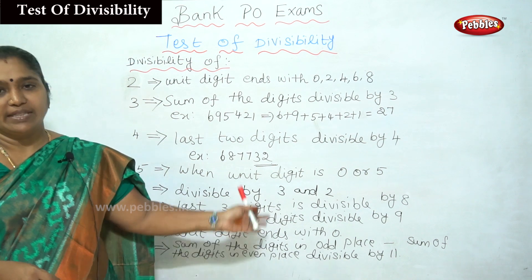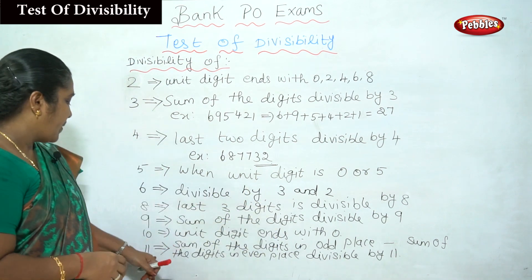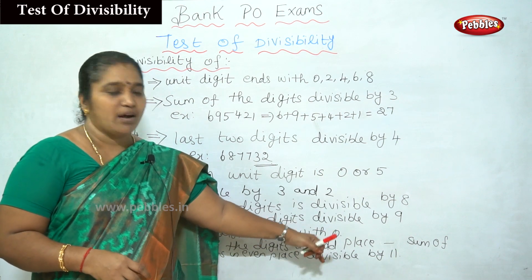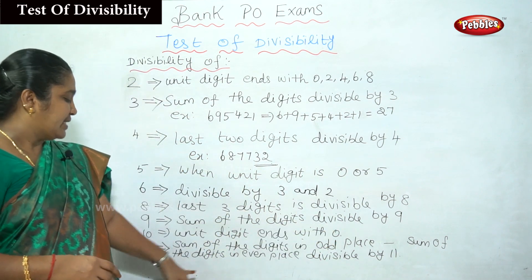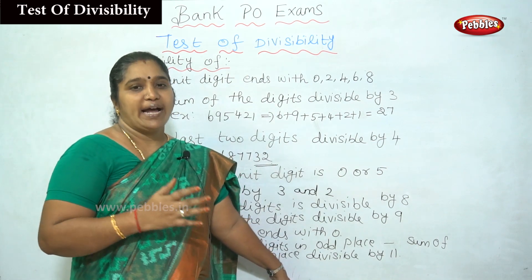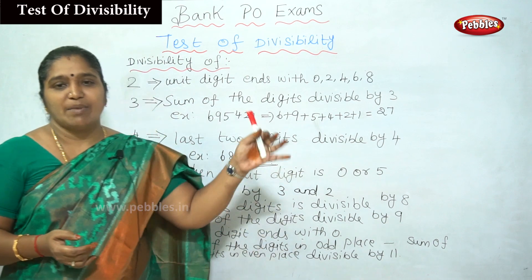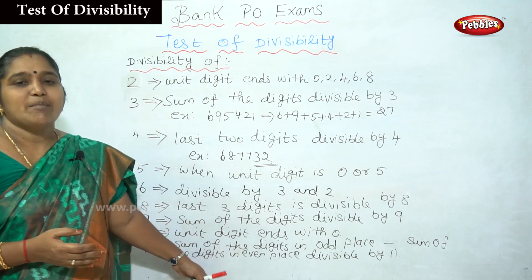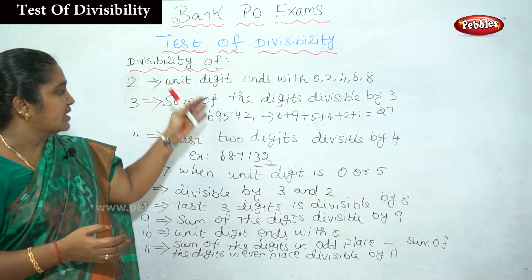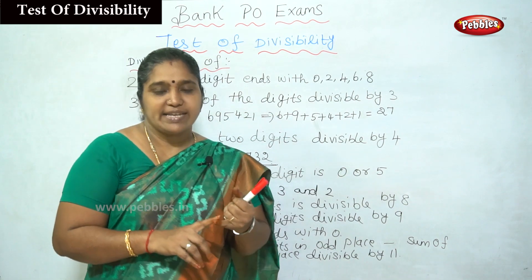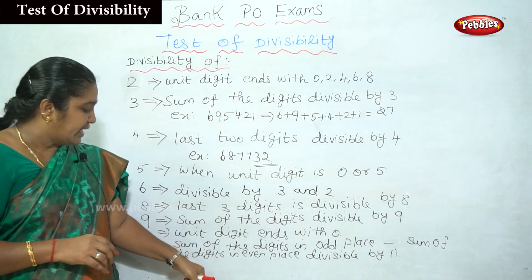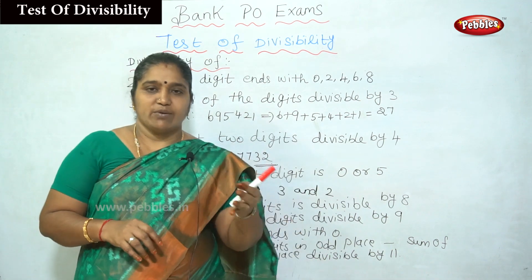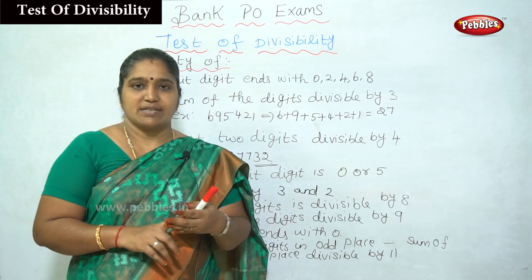For divisibility by 11: find the sum of digits in odd places and the sum of digits in even places. If their difference is divisible by 11, then the number is divisible by 11. We must memorize these important formulas and divisibility rules so we can easily solve simplification and algebra problems.